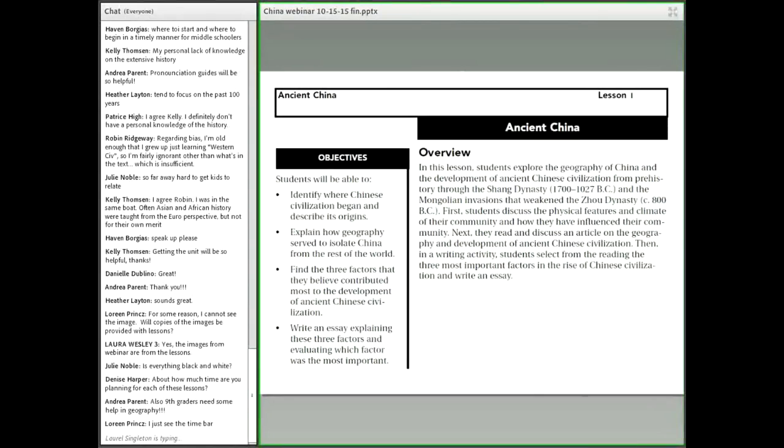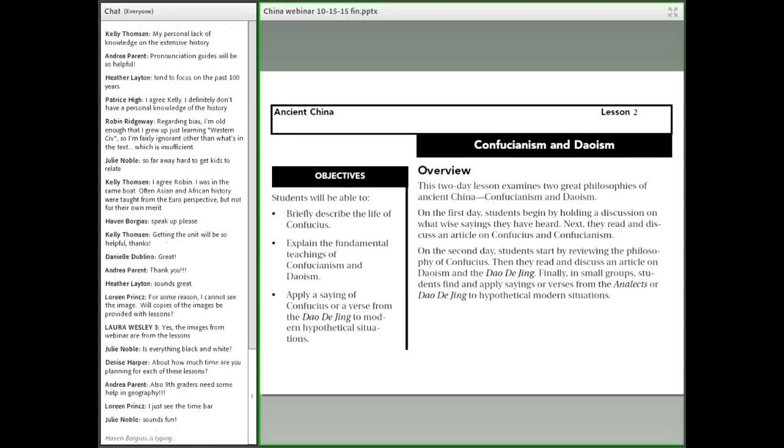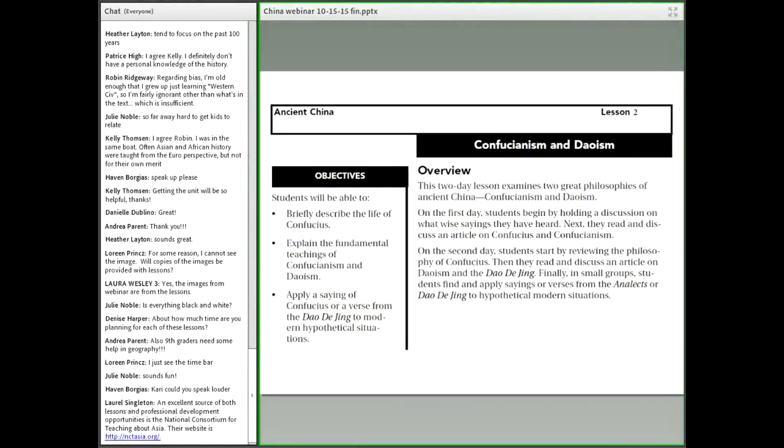Our second lesson, which we're going to cover in more depth, is on Confucianism and Daoism. The real takeaway is you see how ideas and philosophy are really important in shaping culture. We're focusing on two different sets of ideas and how they matter—there are different ways to approach culture based on how people think. We're using sayings from Chinese philosophy to get students to think about how ideas work in culture.